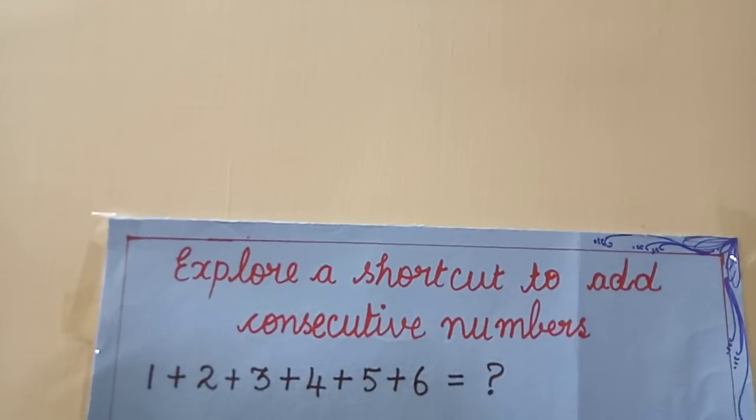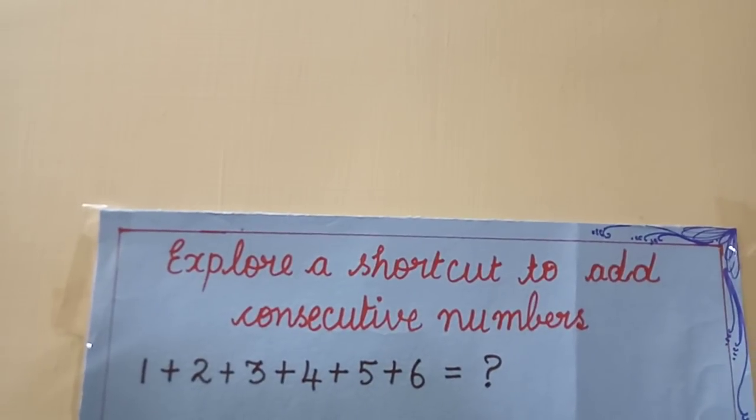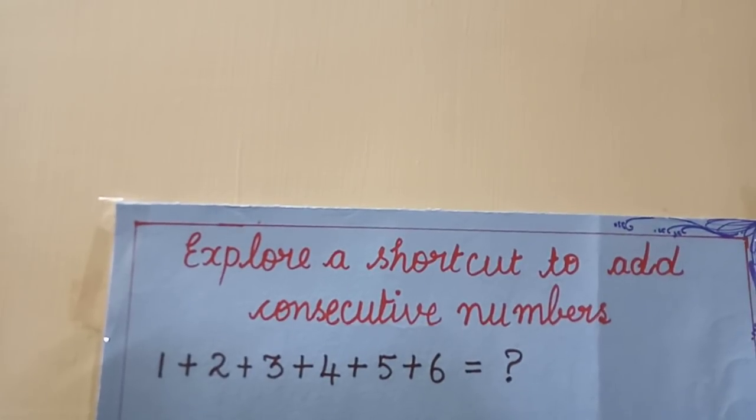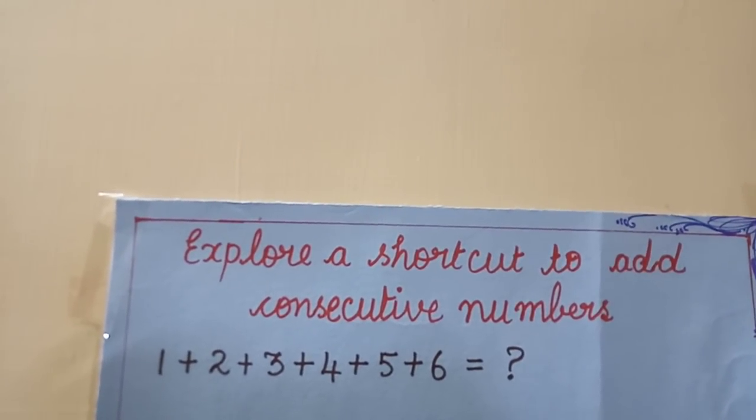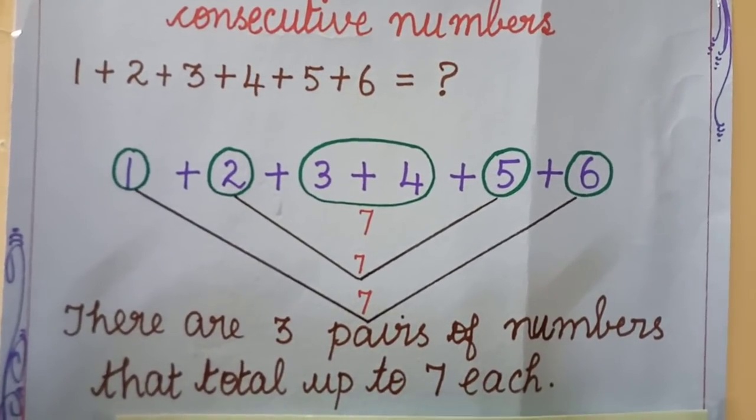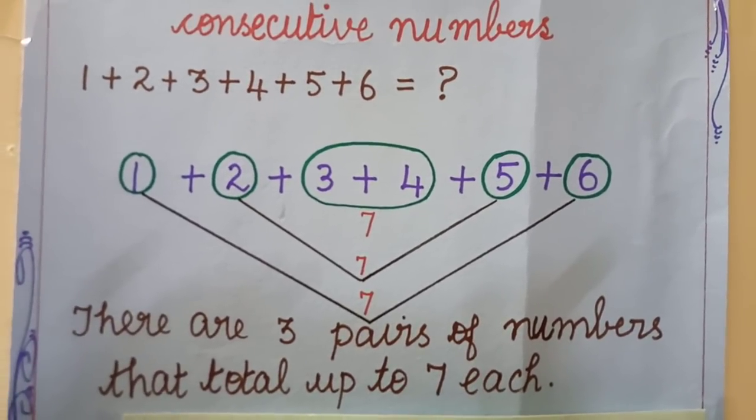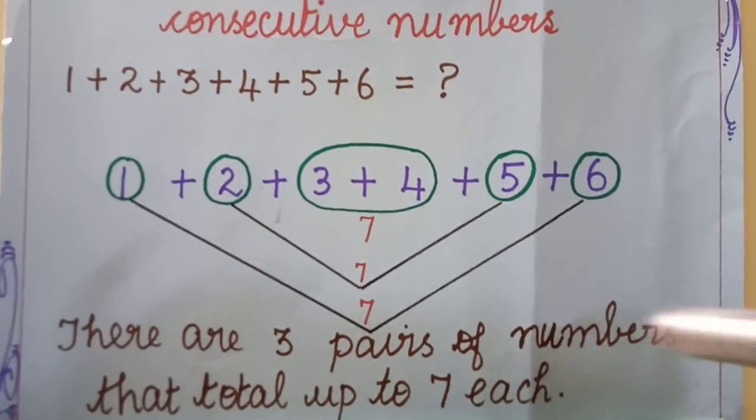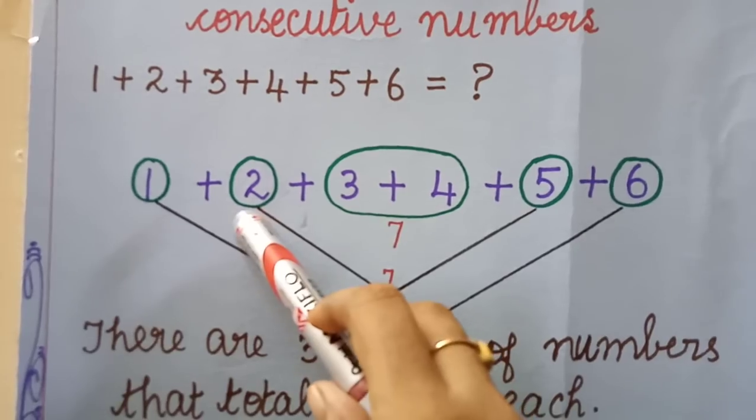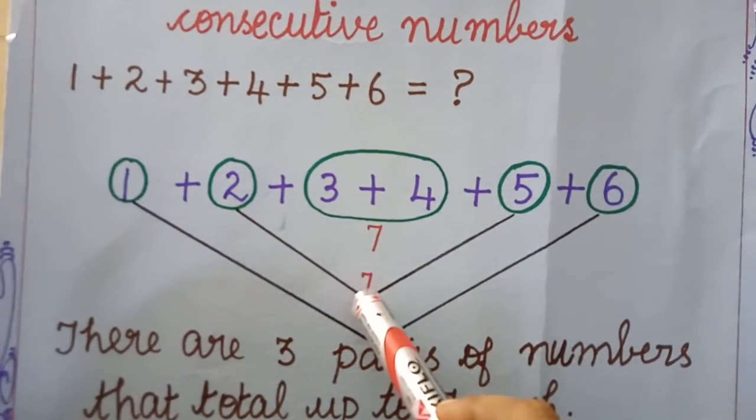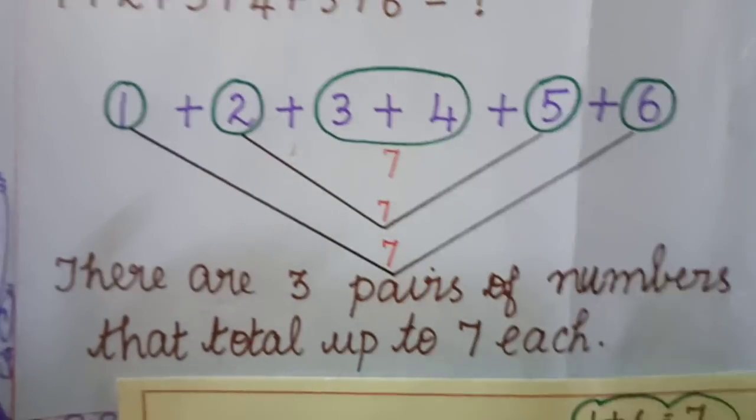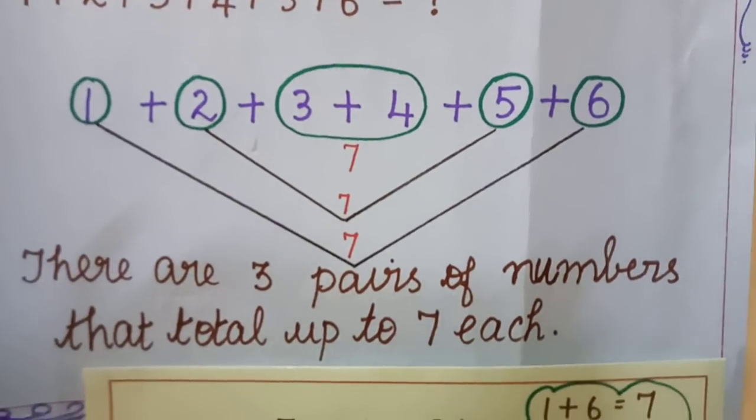Our next question is: explore a shortcut to add the consecutive numbers. And the question: 1 plus 2 plus 3 plus 4 plus 5 plus 6 gives you what? Here the given numbers are arranged in such a way that these numbers make up a total of the same number. Here we have 3 plus 4 grouped together and they make up to a total of 7, and 2 plus 5 makes up a total of 7, 1 and 6 makes up to a total of 7. Thus there are 3 pairs of numbers that total up to 7 each.